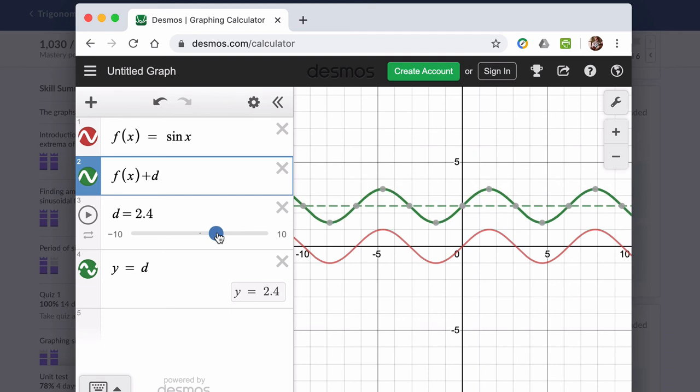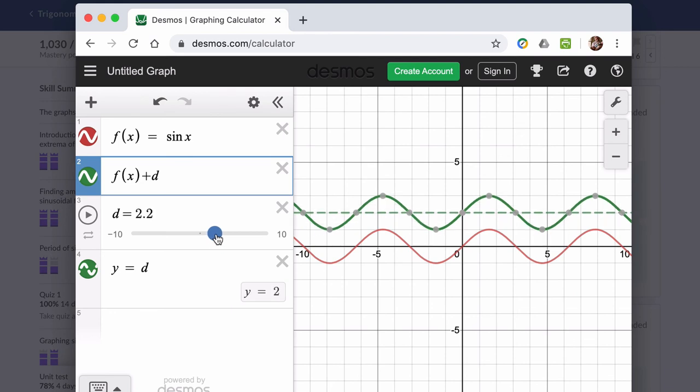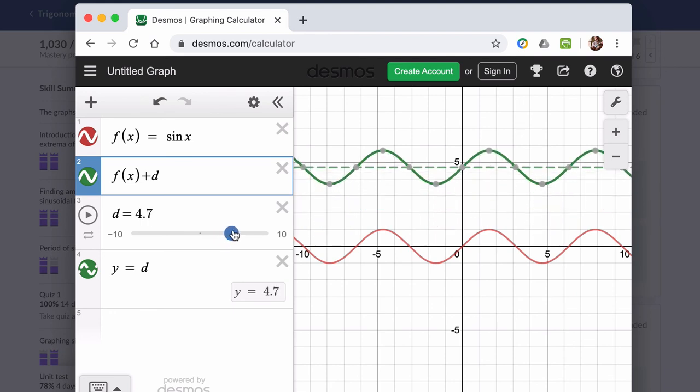So this midline is really the center point of your trig function, which is special. But it also is telling you how much you're shifting your function or translating your function up or down. Just like for any function.